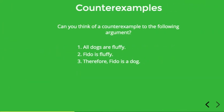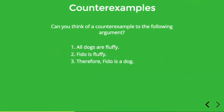Let's get some practice with this concept by looking at some basic examples. Take a look at the following argument and see if you can come up with a counter example: All dogs are fluffy; Fido is fluffy; therefore Fido is a dog. Is this argument valid? Is it possible for premises one and two to be true but three false?